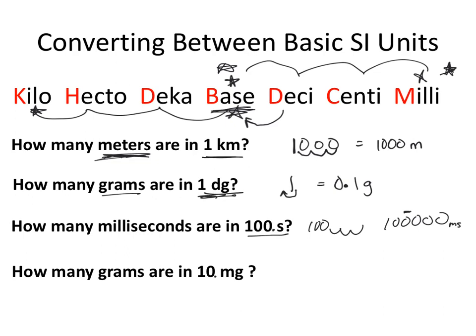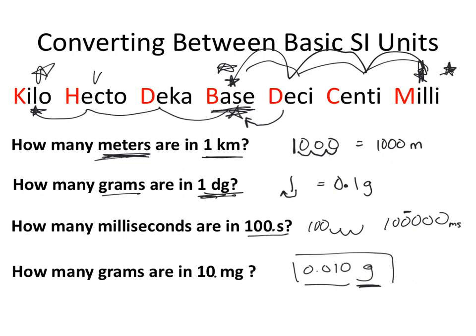In the last example, we have 10 milligrams and want to convert to grams — going from milli back to the base, which is three spaces to the left. That gives us 0.010 grams. We've moved to a larger unit of measurement, so the numerical value is smaller. This is how we convert between basic SI units, and this approach allows us to get interrelationships between any of these measurements in the metric system.